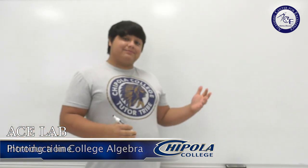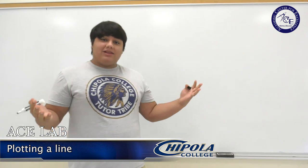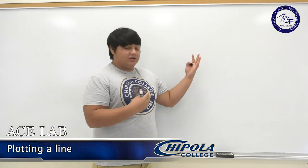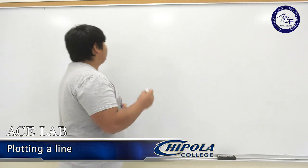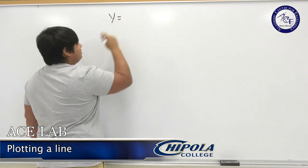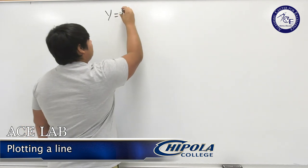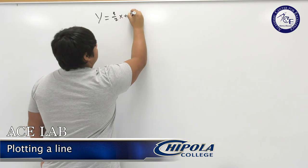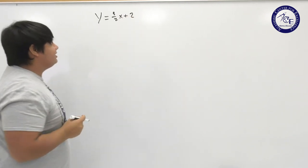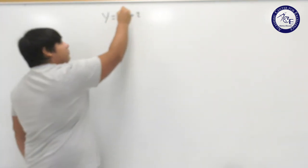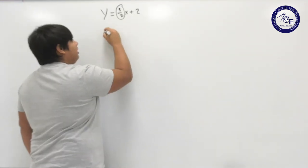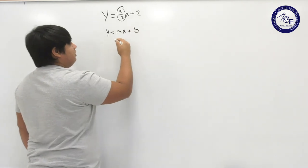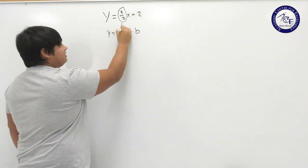When we plot a line, we're given an equation and then we're asked to put that onto a graph. Lines are usually written in the form y equals mx plus b. For example, let's say y equals three-halves x plus 2. This is the slope-intercept form. Here m is the slope - why mathematicians chose m, I don't know - and b is the y-intercept.